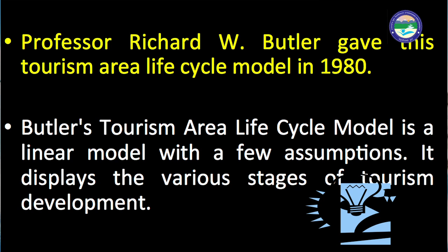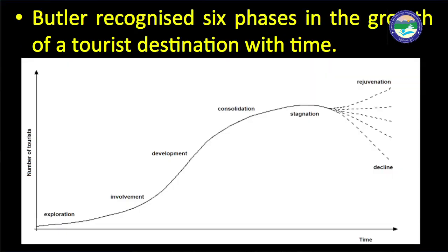Butler's tourism area life cycle model was given by Professor Richard W. Butler in 1980. It is a linear model with a few assumptions. It displays the various stages of tourism development and shows the various phases through which a new destination or a new tourism product goes through. Butler recognized six phases of growth of a tourist destination, with time on the x-axis and number of tourists on the y-axis.